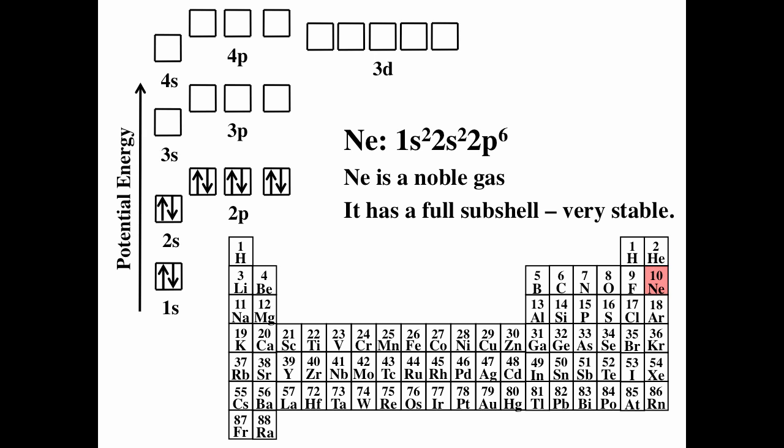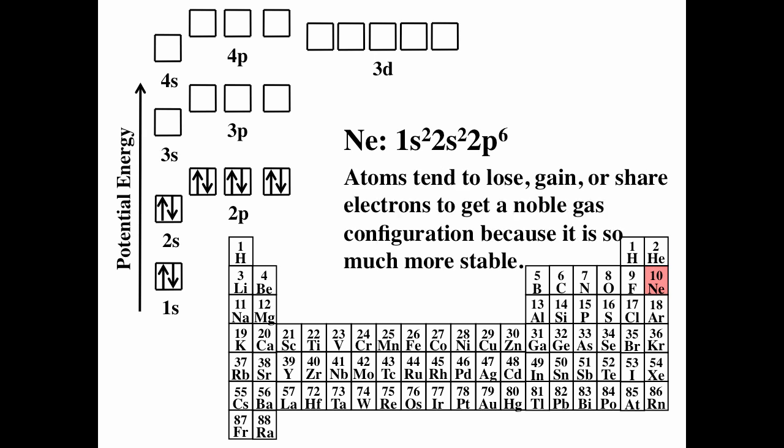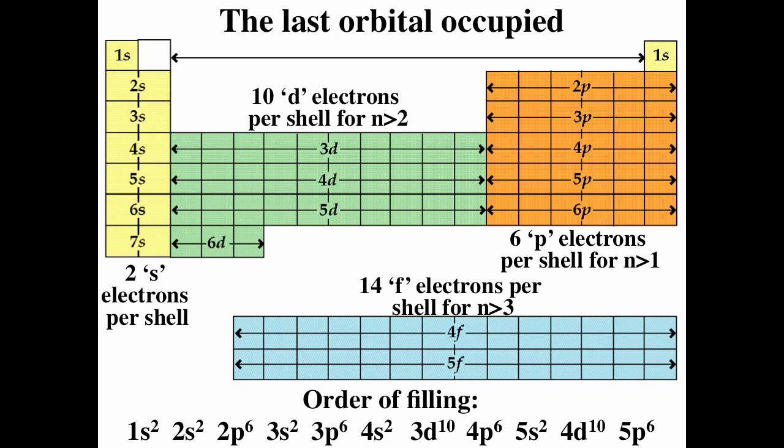Noble gases are fairly stable. Atoms tend to want to gain, lose, or share electrons to get noble gas configuration because it is so much more stable. Looking at the periodic table, we can think about what is the last orbital that was actually occupied. The two columns on the left are where s orbitals are populated. The ten columns in the middle are where d orbitals get occupied. The six columns on the right are where p orbitals get occupied. On the bottom, lanthanides and actinides have 14 columns where the f orbitals get occupied. We can match the order of filling to the periodic table.